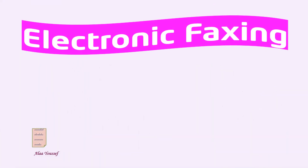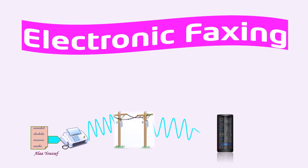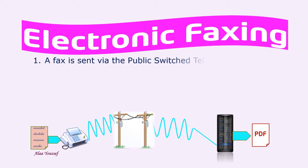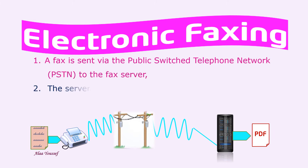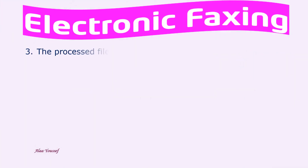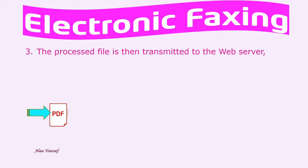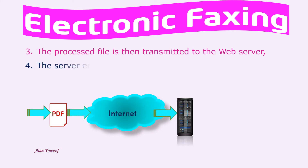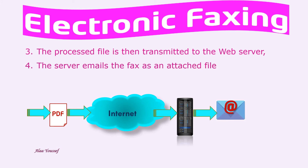Electronic faxing. The fax is sent via the public switched telephone network to the fax server. The server converts the fax received into PDF or TIFF, which means Tagged Image File Format. The processed file is then transmitted to the web server. The server emails the fax as an attached file, and a message is sent to the mobile phone reporting delivery.